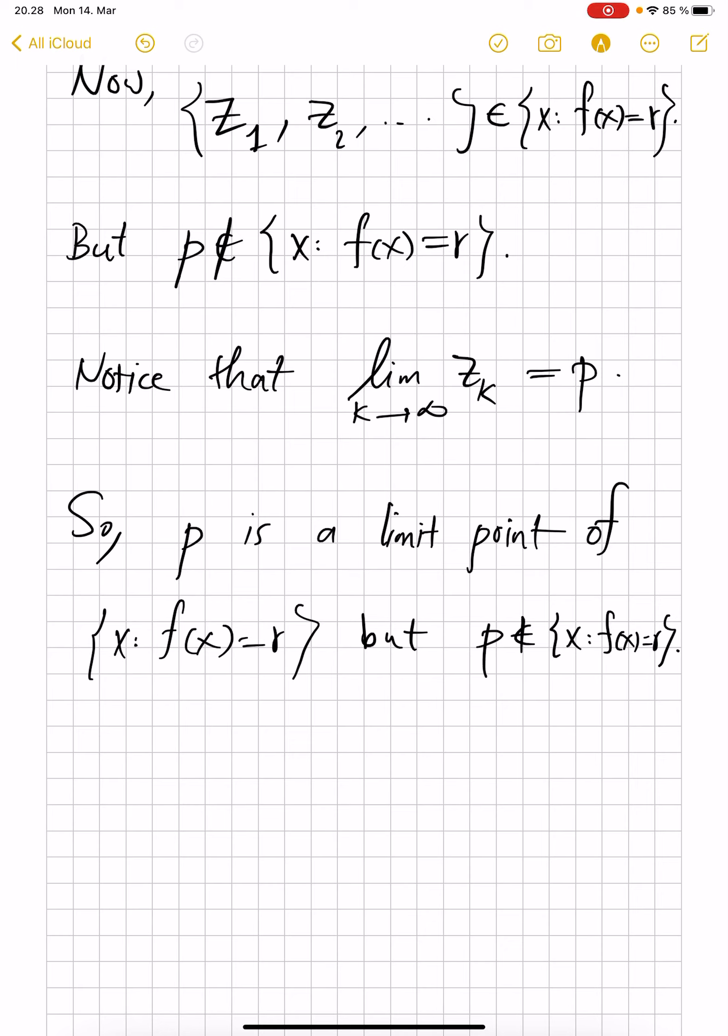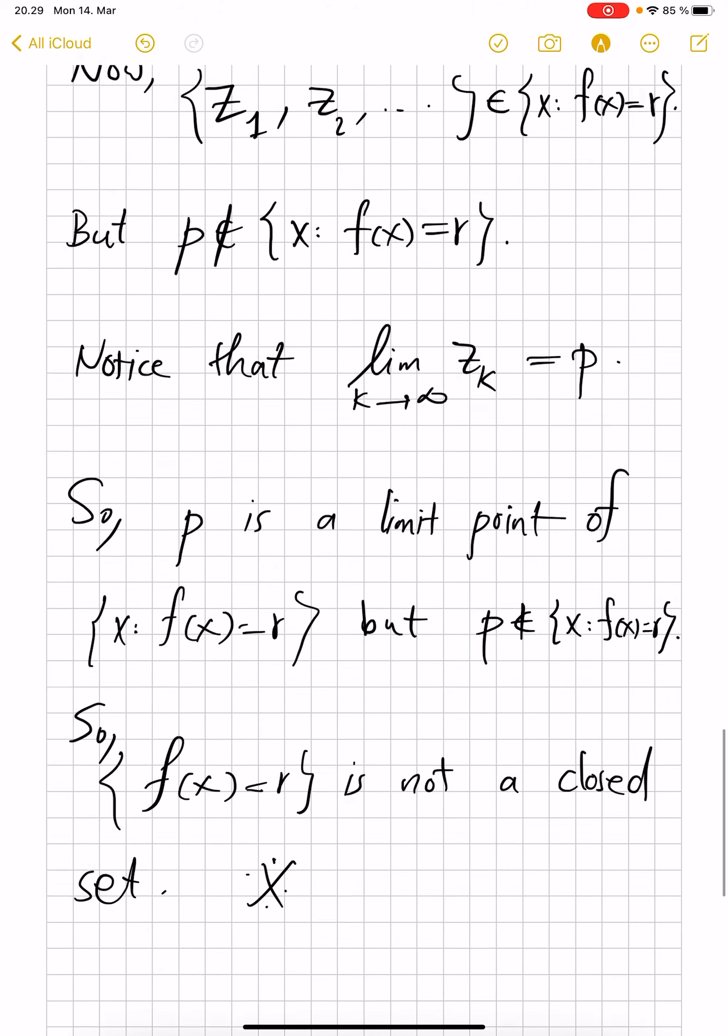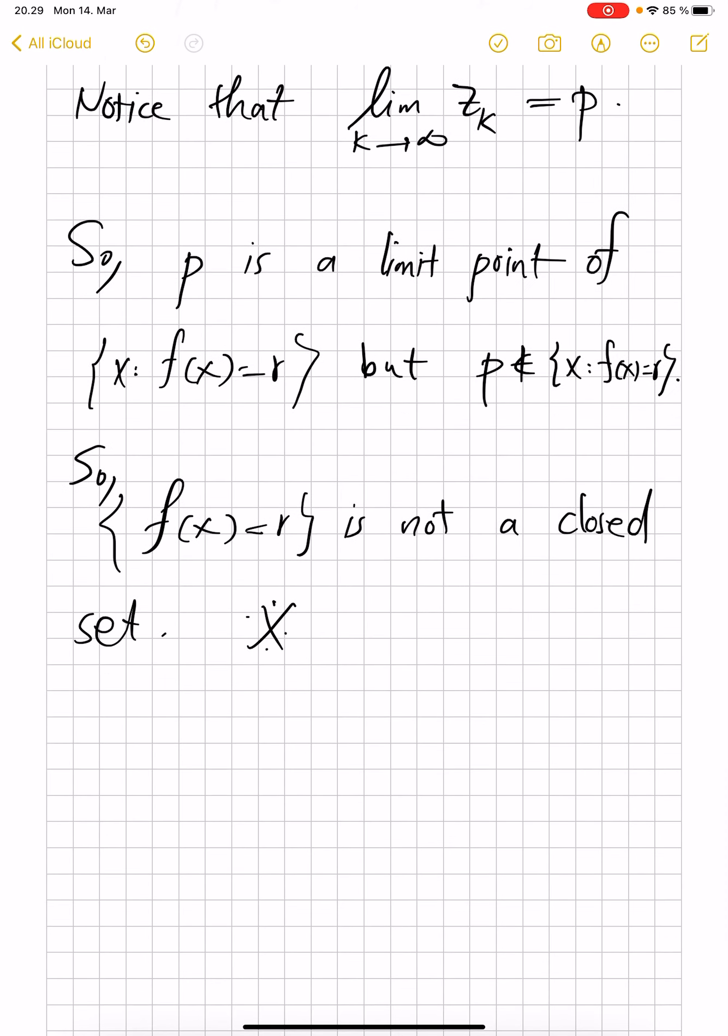But p does not belong to this set. And this shows that {f(x) = r} is not a closed set. And that contradicts the other assumption that for every rational value, this set was supposed to be closed. So we cannot have any point of discontinuity.